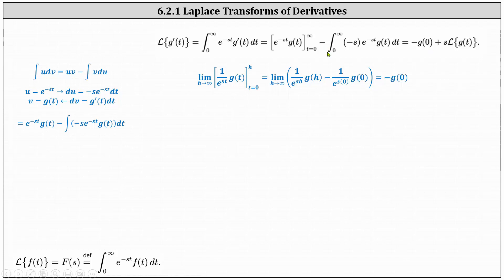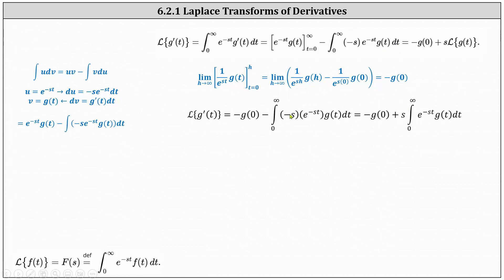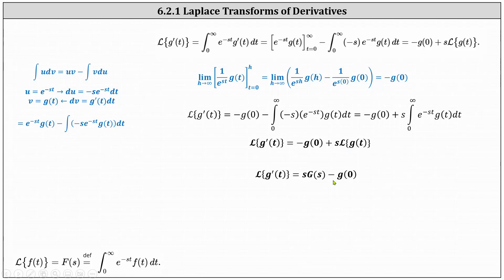And then we still have minus the improper integral from zero to infinity of negative s times e to the power of negative st times g of t dt. To deal with this part, let's begin by factoring out the negative s, which gives us negative g of zero plus s times the integral from zero to infinity of e to the power of negative st times g of t dt. This improper integral is the definition of the Laplace transform of g of t. This indicates the Laplace transform of g prime of t equals negative g of zero plus s times the Laplace transform of g of t, which equals s times big G of s minus g of zero.